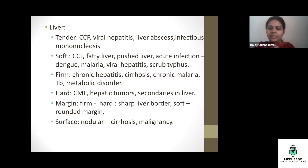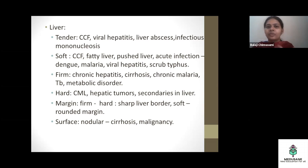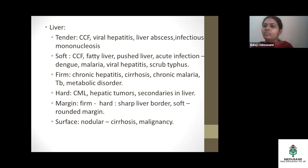Similarly for the spleen: tender spleen suggests acute conditions like CCF, trauma, or splenic abscess. Soft spleen is seen in acute infections such as malaria and dengue. Firm spleen is seen in malignancies or portal fibrosis. The session ends here with this comprehensive approach to fever with hepatosplenomegaly.